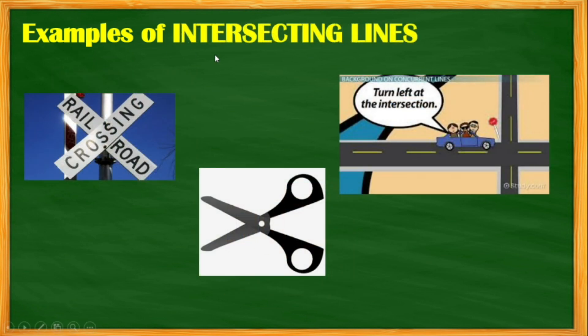Examples of intersecting lines is this one: signage for cross road, railroad crossing, and seesaw.